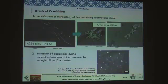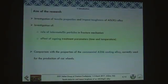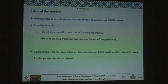Furthermore, especially for wrought alloys, chromium leads to the formation of dispersoids, which are precipitates that form during homogenization time-temperature treatments, usually studied for wrought alloys. The main aims of this research are the investigation of the tensile properties and impact toughness, with particular attention to the role of these intermetallic particles and to the effect of the aging treatment parameters. Finally, a comparison was carried out with the typical performance of A356 alloy, which is widely used for the production of car components.